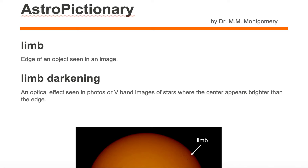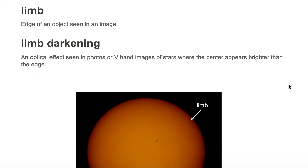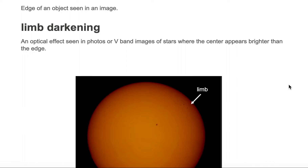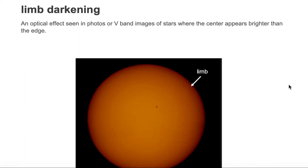In this video, we're going to go through limb and limb darkening. In astronomy, a limb is the edge of an object seen in an image. So if we look at this image of the Sun, the edge is called the limb.